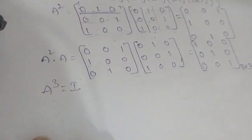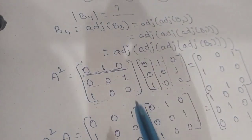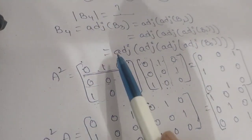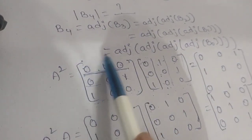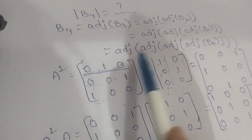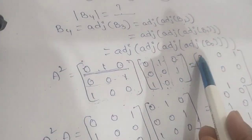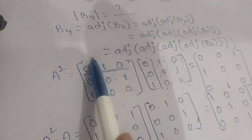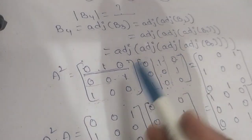I will substitute A³ = I into the expression. Since B4 = adjoint of adjoint of adjoint of adjoint of B0, applying determinant on both sides gives determinant of B4 equals determinant of adjoint applied four times to B0.